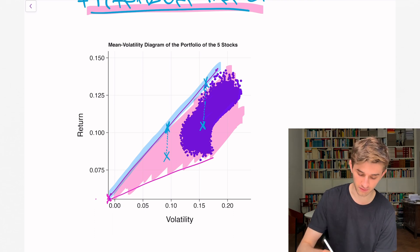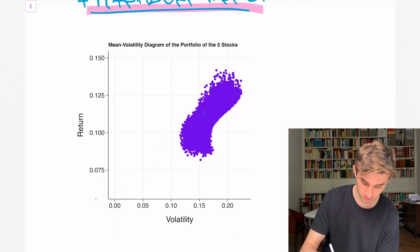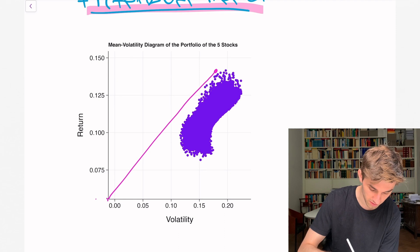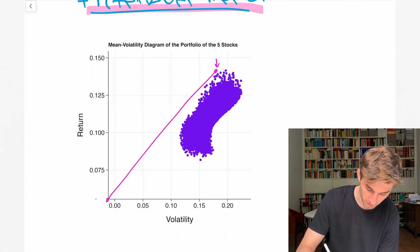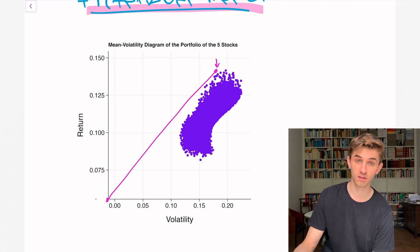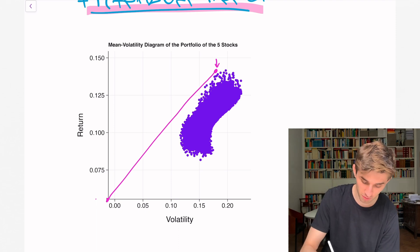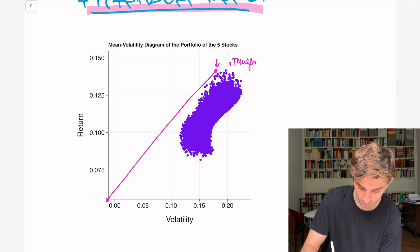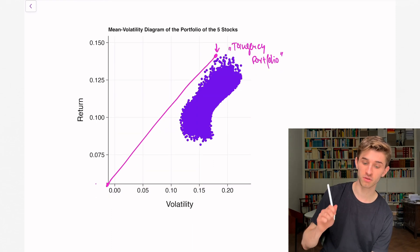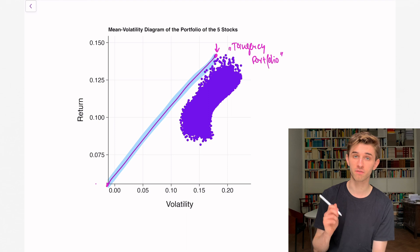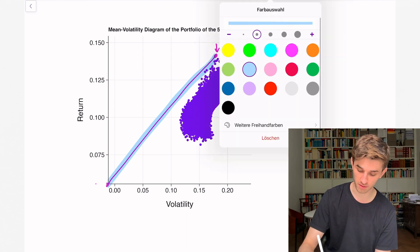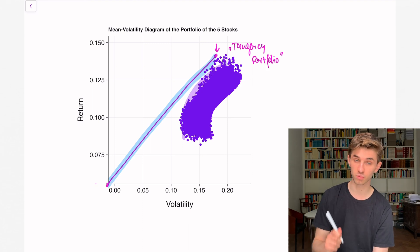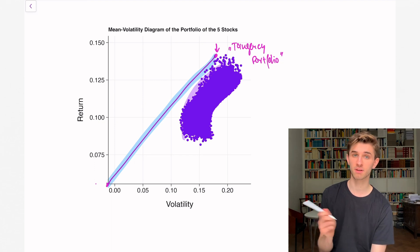That line that includes all the efficient portfolios is the combination of this portfolio of stocks and the riskless bond. And this portfolio is very, very special. It's called the tangency portfolio. And this line is now the new efficient frontier. The old efficient frontier was this line. The new efficient frontier is the blue marked line.